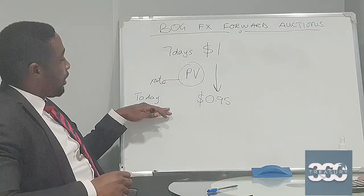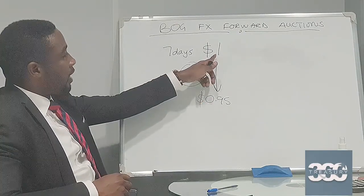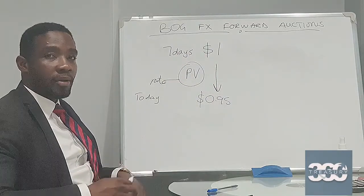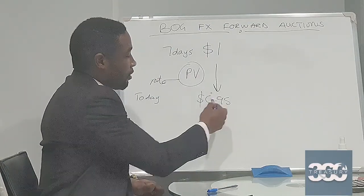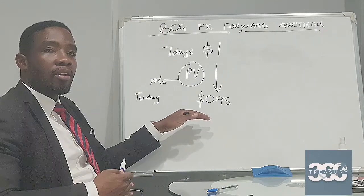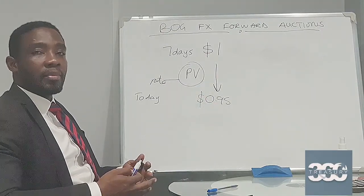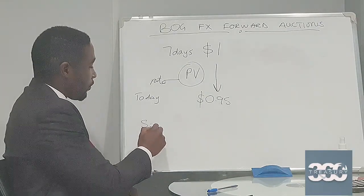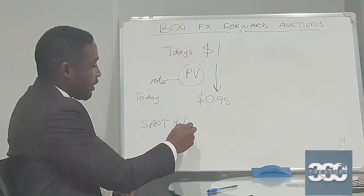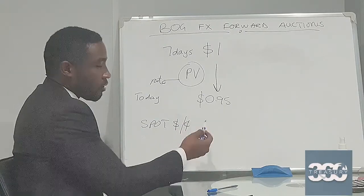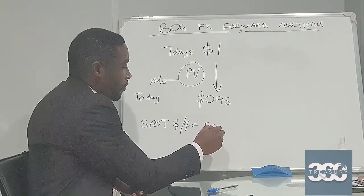What we've done is: if we invest 0.95 dollars today at a certain rate, we arrive at one dollar in seven days. This is a money market transaction. Now we have a certain dollar amount and we want to go into the spot market to find out how much it takes to buy one dollar in the FX market — we go in search of a spot rate. The spot rate, dollar against GHS, currently, for example, will be equal to 5.000.